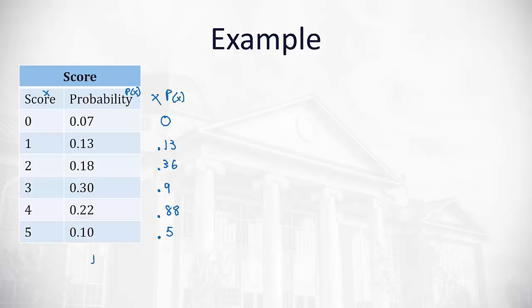If we want to calculate the mean, remember the mean formula says it's the sum of all of the x's times the probabilities, or all those values we just found. So we'll add them up on our calculator: 0.13 plus 0.36 plus 0.9 plus 0.88 plus 0.5. We get an expected value of 2.77.